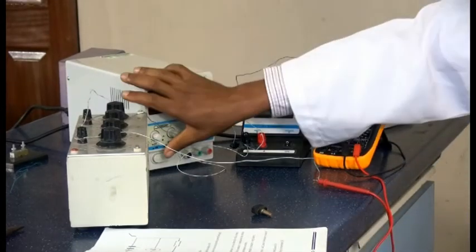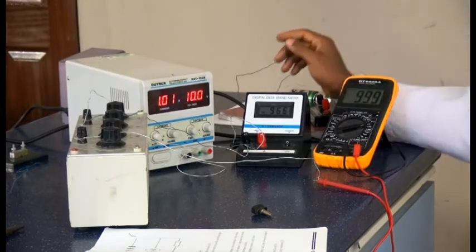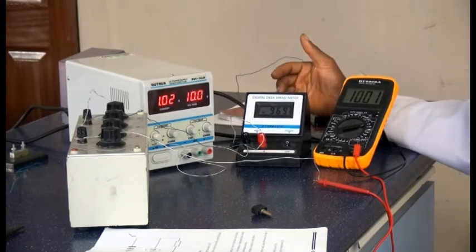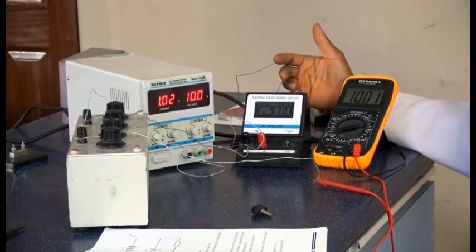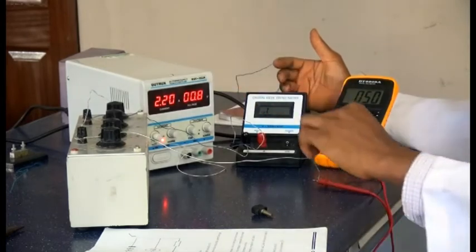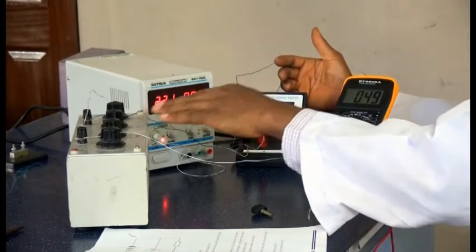What we are going to do is switch on the power supply, look at the current and the voltage dissipating when the resistance box is at zero.